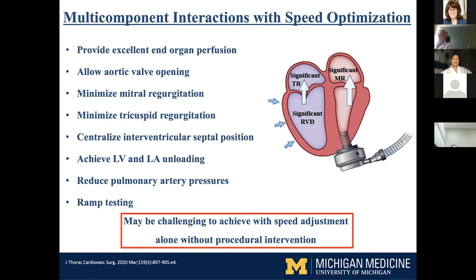With speed optimization and ramp studies, we certainly want to get an echo — done in the initial LVAD state — to optimize speed. This usually occurs when the patient is relatively stable, maybe one to three months after LVAD implant. You commonly perform a simultaneous echo and right heart catheterization. The goals include: providing excellent end-organ perfusion, allowing aortic valve opening, minimizing mitral regurgitation, minimizing tricuspid regurgitation, centralizing the septal position, achieving LV and LA unloading, and reducing PA pressures. That's a lot of goals to manage with speed alone — which is why it's good to address the aortic or mitral valve surgically at the time of LVAD implantation.